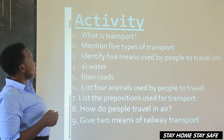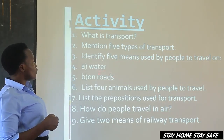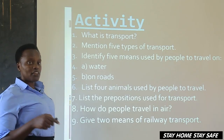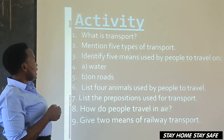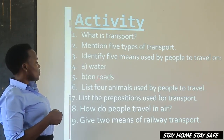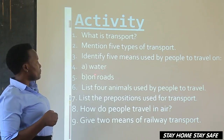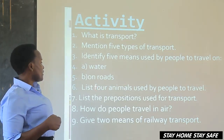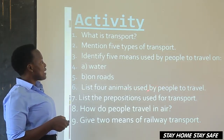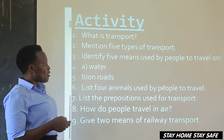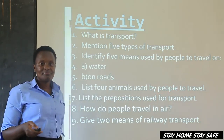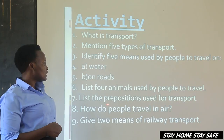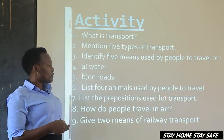Number three, identify five means used by people to travel on water. Write the means. Then identify five means used by people to travel on roads — in other words, the means of road transport. The next number, list four animals used by people to travel. Next, list the prepositions used for transport — write the prepositions we use when talking about transport.